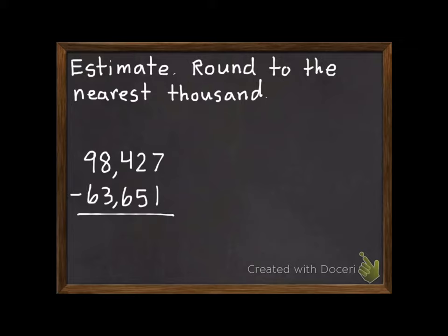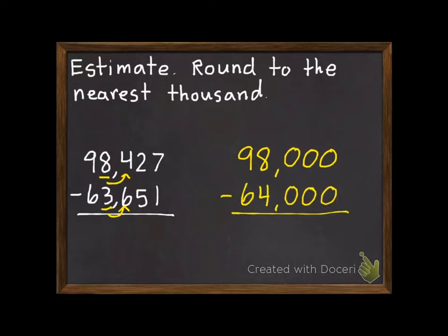So same thing, rounding to the thousands. So I'm going to decide if our thousands place will stay the same or if we'll go up 1. So that 8 is going to stay the same, and this 3 is going to go up to a 4. This is subtraction, it's another thing you need to watch out for if we're adding or subtracting.